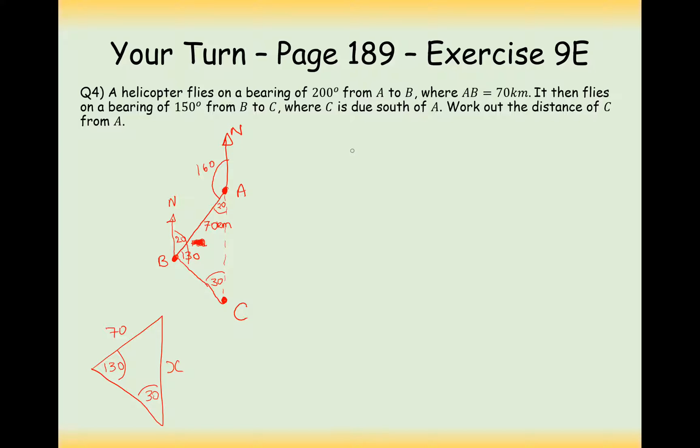And this here is definitely going to be a version of the sine rule. So given that I need to work out x, I'm going to need x on the top, and it's going to be sine 130 on the bottom. And then it's going to be equal to 70 over sine 30. So therefore, x is going to equal 70 times sine of 130 over sine 30, which is going to equal 107.246222. So to three significant figures, it's going to be 107 kilometers.